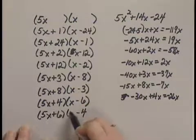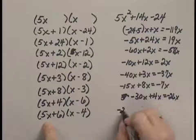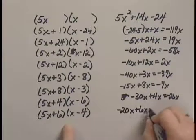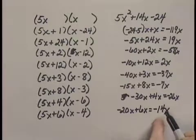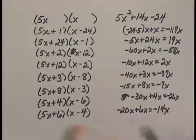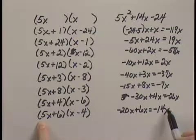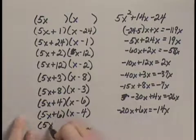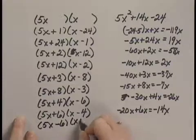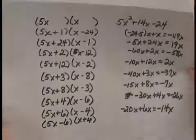(5x + 6)(x - 4) gives me -20x plus 6x, which is -14x. Ah, it's not exactly right, but I know I've got the right one here, just about. Since (5x + 6)(x - 4) gives me a middle term of -14x, (5x - 6)(x + 4) should give me the right middle term. I'm going to write that in here.